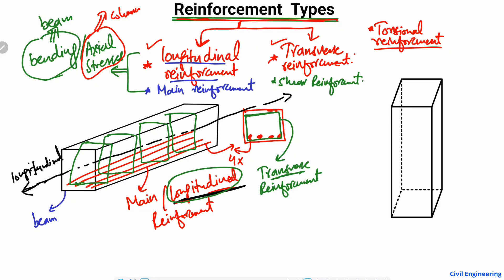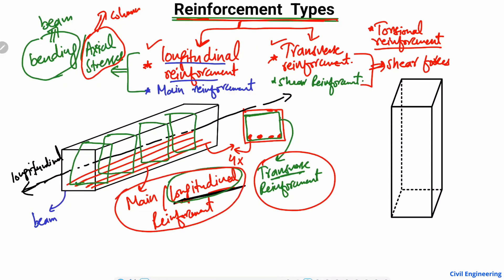The transverse reinforcement — the shear reinforcement — is primarily used to take the shear forces in a column or beam. The main or longitudinal reinforcement is provided to take the bending tension stresses or the axial stresses.